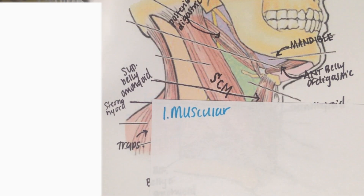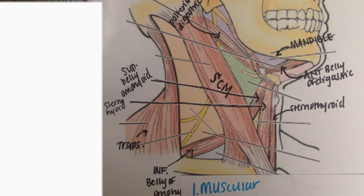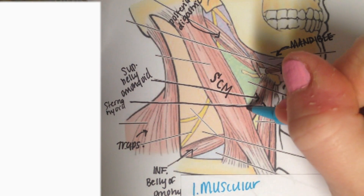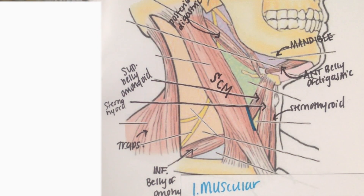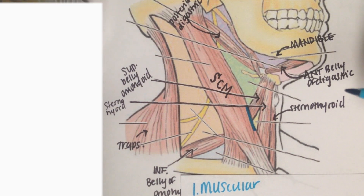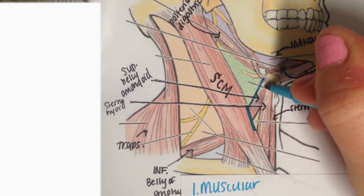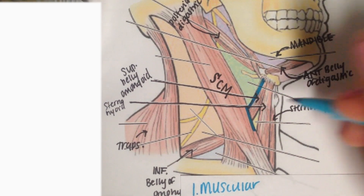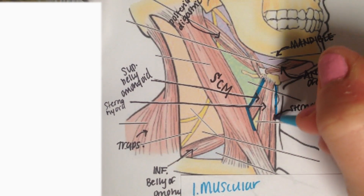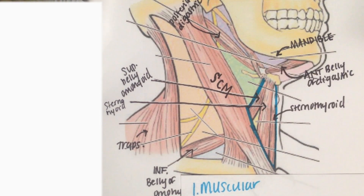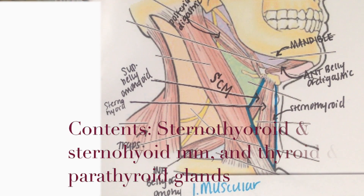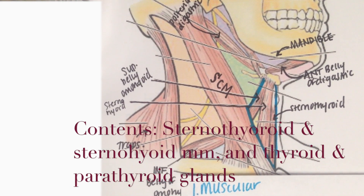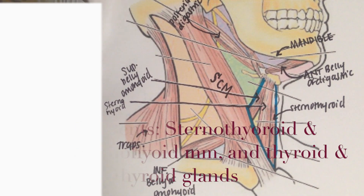We're going to start off with the muscular triangle and label the borders so you can label them with me. First we're going to start with the inferior border — the sternocleidomastoid muscle. We're also going to have the superior belly of the omohyoid muscle, and then the midline to the hyoid bone as the last border for our muscular triangle. The muscular triangle contains the sternothyroid, the sternohyoid muscles, and the thyroid and parathyroid glands.